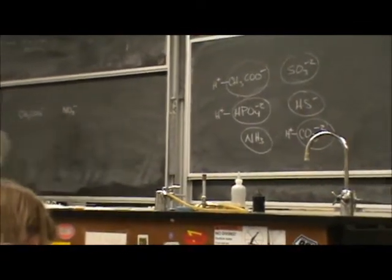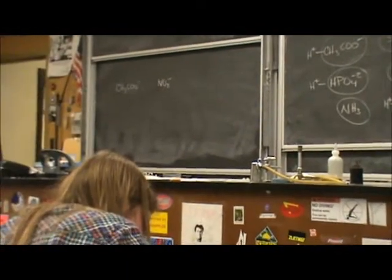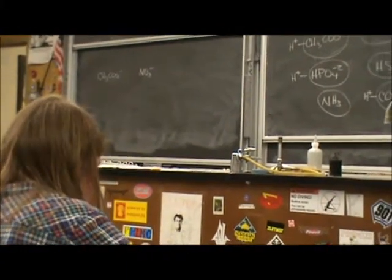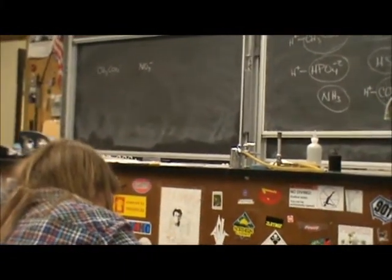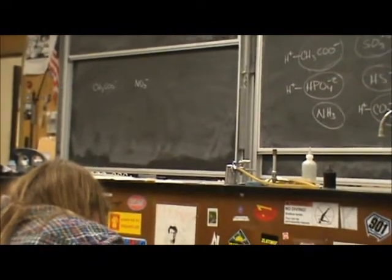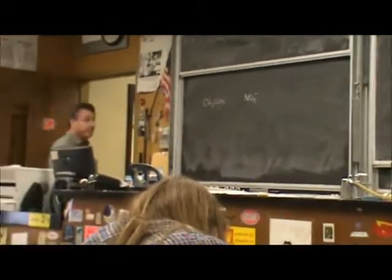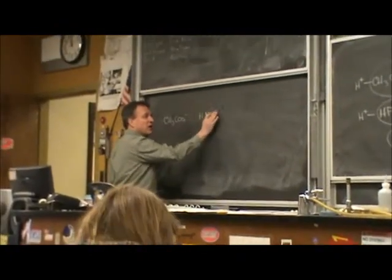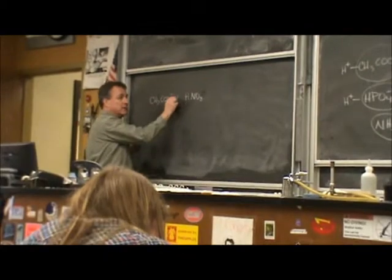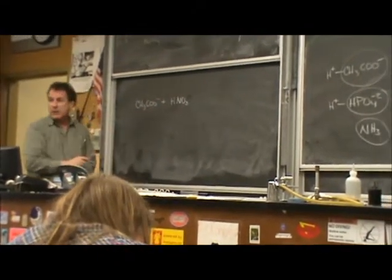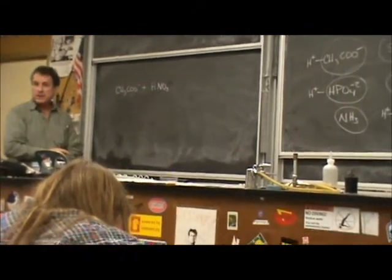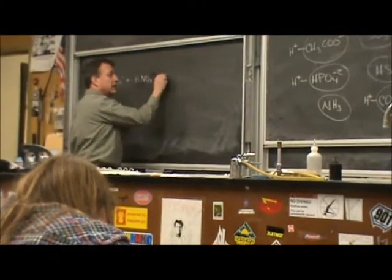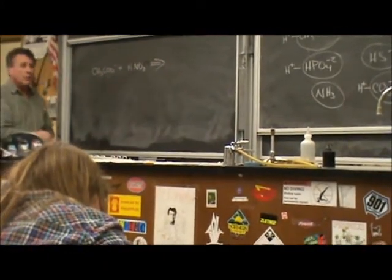Which is the stronger base? Acetate. And therefore who should start with the hydrogen ion? Then if our goal is to have hydrogen ions be transferred, if this is the weaker base, then we want the hydrogen ion to start there and let the stronger base take it away, right? And if that happens, what will result?